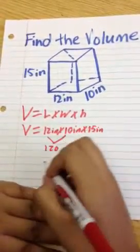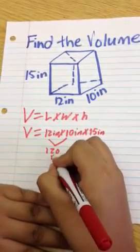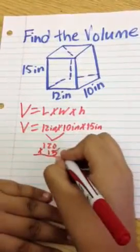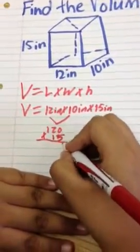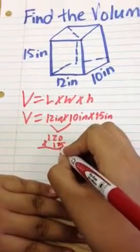So, then you multiply 120 times 15. 5 times 0 equals 0. 5 times 2 equals 10. And you carry the 1.